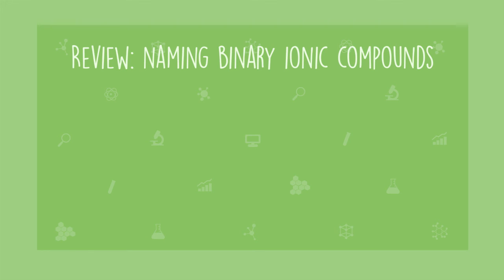To name a binary ionic compound consisting of a metal combined with a nonmetal, the metal is always named first. The nonmetal is named second, and the ending of its name is changed to -ide.